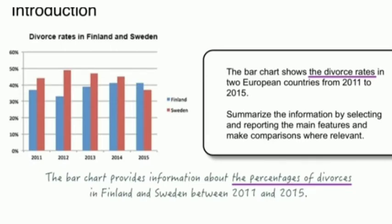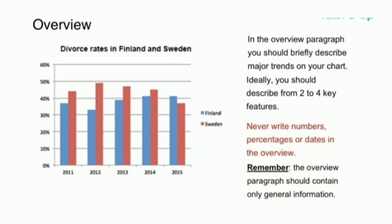The bar graph shows the divorce rate in two European countries. Now let's look at the introduction paragraph: 'The bar chart provides information about the percentage of divorces in Finland and Sweden between 2011 and 2015.' In this introduction I have rephrased the statement — I replaced 'divorce rate' with 'percentage', and replaced 'from' with 'between...and'.